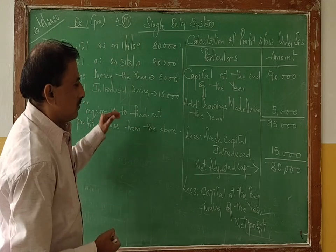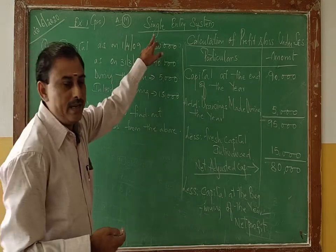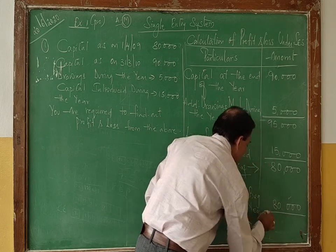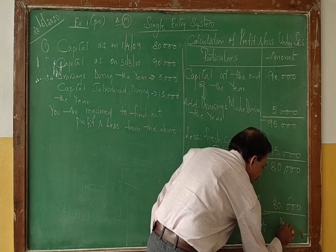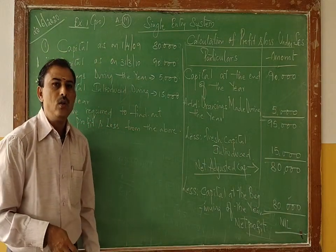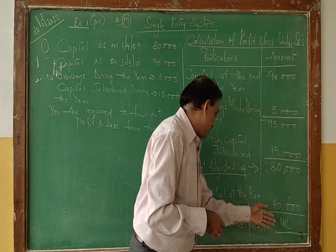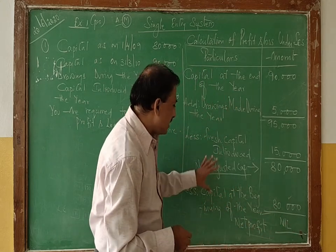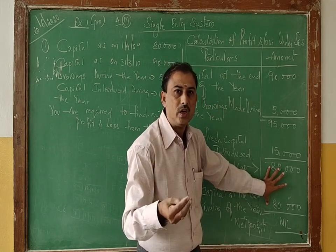The capital at the beginning of the year is 80,000. Subtracting 80,000 from the net adjusted capital of 80,000, the result is zero. Both figures are equal, so there is no profit and no loss. If the net adjusted capital is more, you get profit; if the capital at the beginning is more, you get a loss. In this problem, both figures match, so we are making neither profit nor loss.